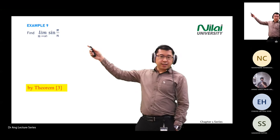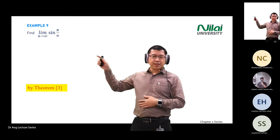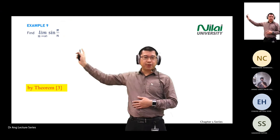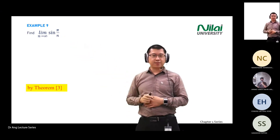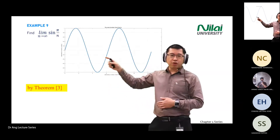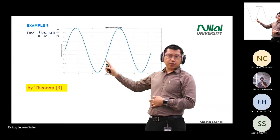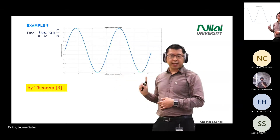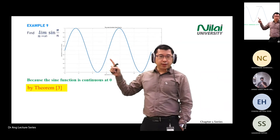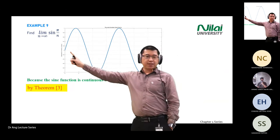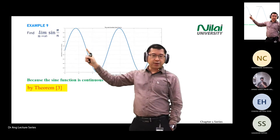Now we start looking at trigonometry in sequences. In this example we have sin(π/n) with a limit as n approaches infinity. You know the normal sine wave looks like this — if you plot the value versus the angle, when we are near zero the sine wave continues upward.